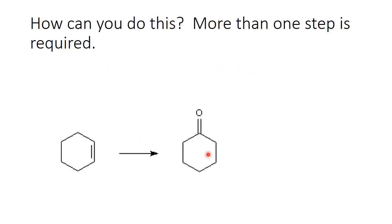How can you do this? More than one step is required, so think this through. When I look at this, I think backwards to what can this ketone have come from? And, of course, I think, that could have been an alcohol. And I think, what can I take this alkene to that might get me to this? And I can take an alkene to an alcohol. So, right there, I have identified my functional group sequence. I'm going to take my alkene to an alcohol and then take it to the ketone.